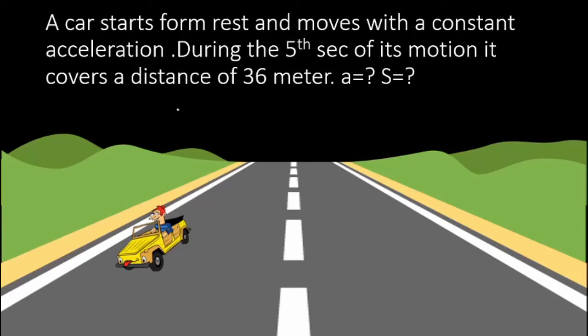Last numerical of the chapter. A car starts from rest and moves with a constant acceleration. During the fifth second of its motion, it covers a distance of 36 meters. We have to calculate total acceleration of the system and total distance covered.